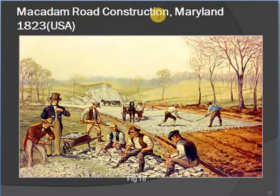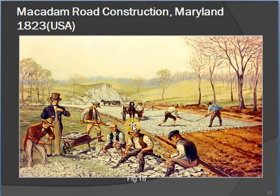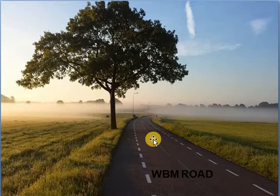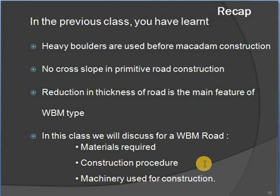This is a Macadam road construction image from Maryland, USA, in 1823. At that time there was no machinery — only horse wheels and manual power were used. The latest technology shows how modern double-bound roads look — very well constructed with natural beauty.